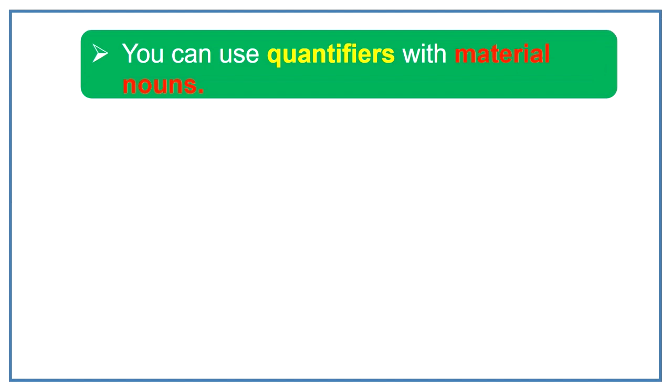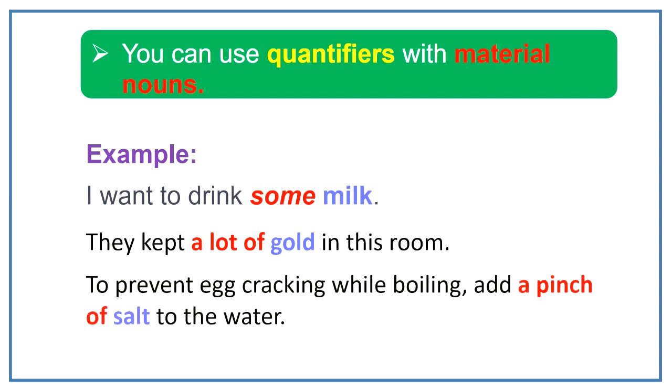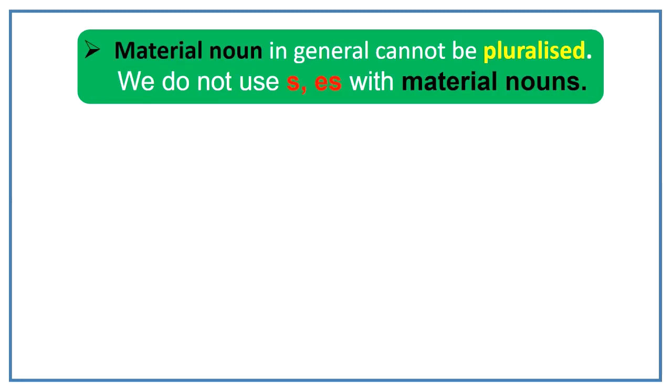You can use quantifiers with material nouns. But remember, we can use only those quantifiers with material nouns that are used with uncountable nouns. For example, I want to drink some milk. Here milk is a material noun and some is the quantifier used with it. In the same manner, they kept a lot of gold in this room. To prevent egg cracking while boiling, add a pinch of salt to the water.